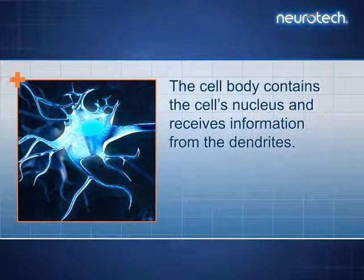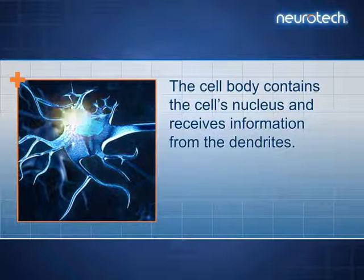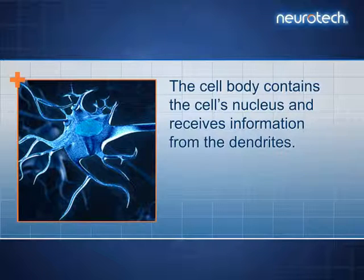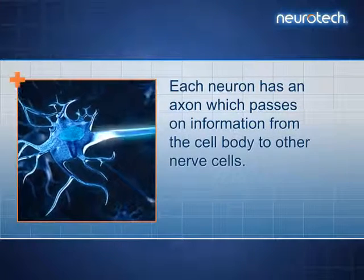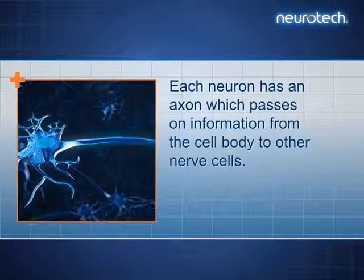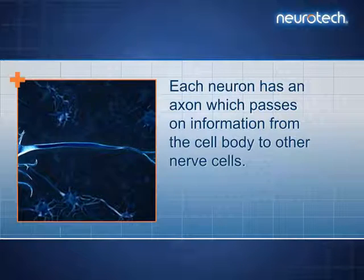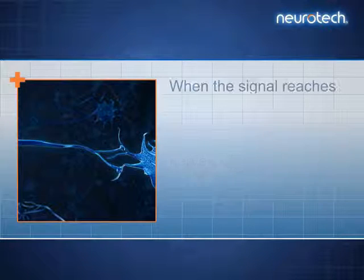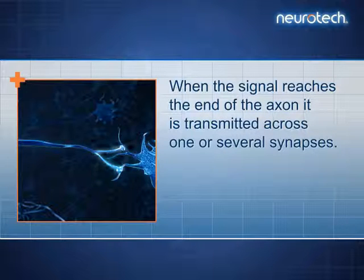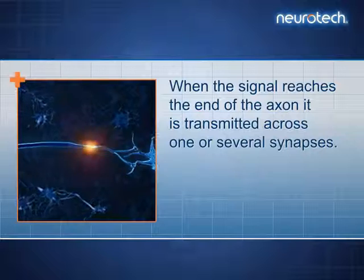The cell body contains the cell's nucleus and receives information from the dendrites. Each neuron has an axon which passes on information from the cell body to other nerve cells. When the signal reaches the end of the axon, it is transmitted across one or several synapses.